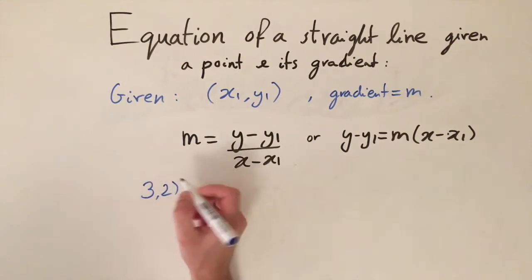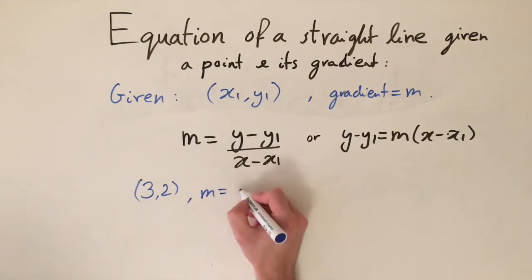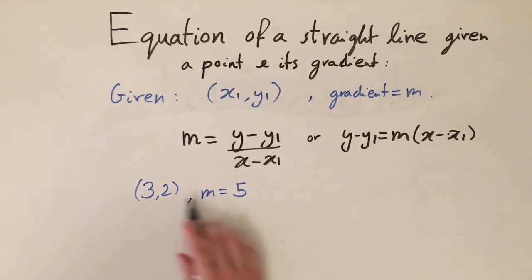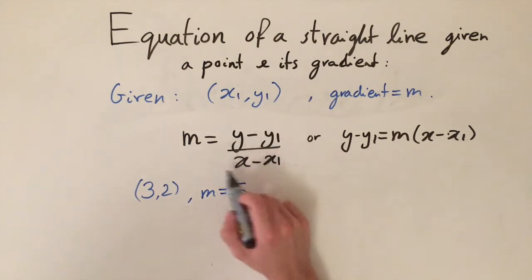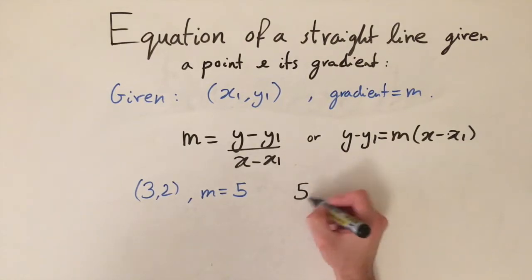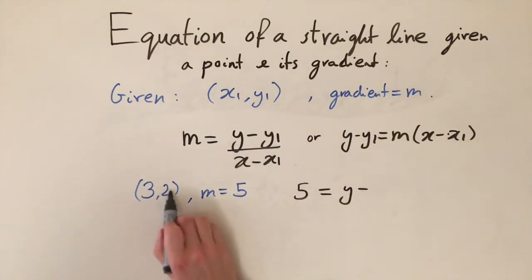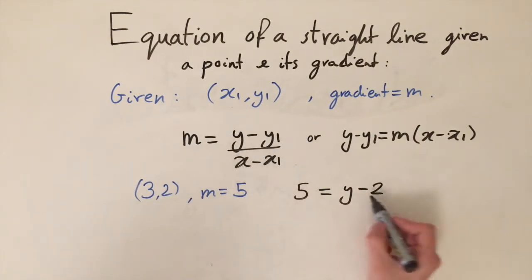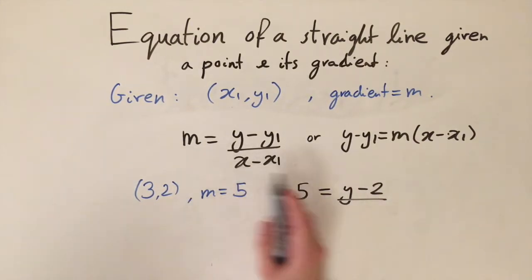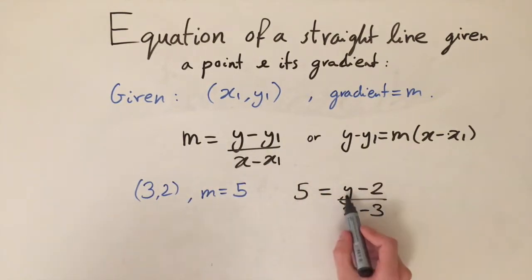Let's look at some examples. First, we're given the point (3, 2) and the gradient is equal to 5. We want to work out the equation of the straight line, so let's plug everything into the formula. m equals 5, so we get: 5 equals y minus y1, where y1 is the y-coordinate of the point, so y minus 2, divided by x minus the x-coordinate, so x minus 3.